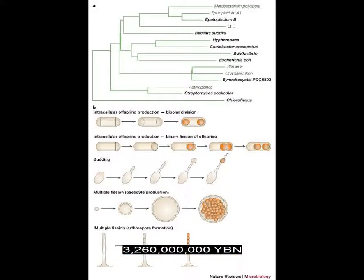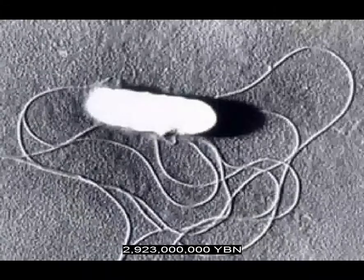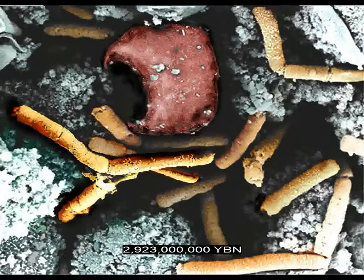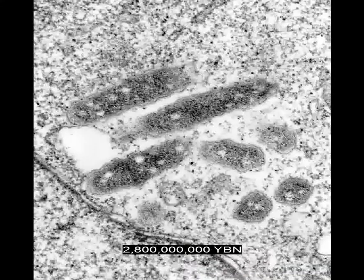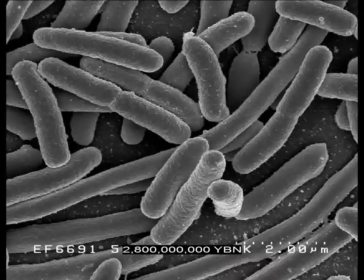Budding evolves in prokaryotes. Earliest acritarch fossil — unicellular microfossils with uncertain affinity. Bacteria firmicutes evolve — gram-positive bacteria. Causes of botulism, tetanus, anthrax. First endospores. Bacteria proteobacteria evolve — Rickettsia, ancestor of all mitochondria; gonorrhea, salmonella, E. coli.